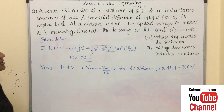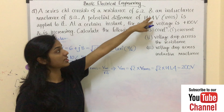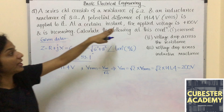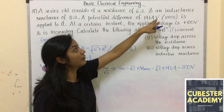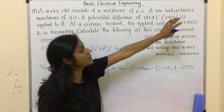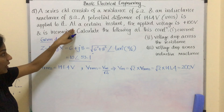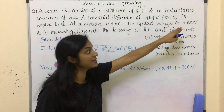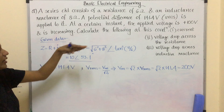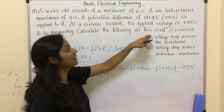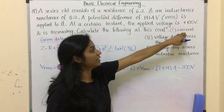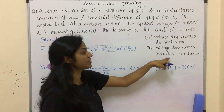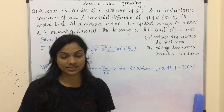A series circuit consists of a resistance of 6 ohm and an inductive reactance of 8 ohm. A potential difference of 141.4 volt RMS value is applied to it. At a certain instant the applied voltage is plus 100 volt and is increasing. Calculate the current, voltage drop across the resistance, and voltage drop across the inductive reactance.